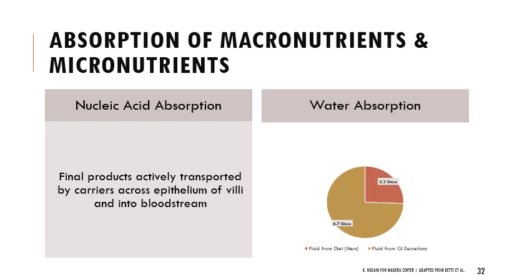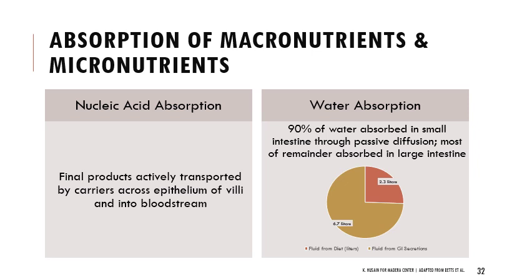Water is absorbed primarily in the small intestine. About 6.7 liters of fluid from GI secretions and 2.3 liters from diet enter the small intestine daily. 90% of that water is absorbed through passive diffusion — called osmosis — in the small intestine. Most of the remainder is absorbed in the large intestine. Unless you have serious gut issues or diarrhea, most water should not be leaving your body.